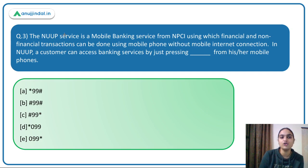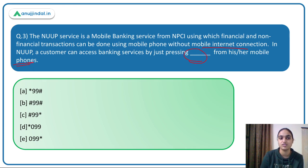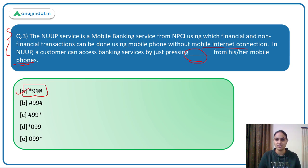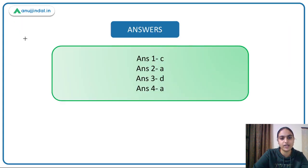The fourth question states that NUUP is a mobile banking service from NPCI using which financial and non-financial transactions can be done using a mobile phone without an internet connection. A customer can access bank services by dialing *99# (star 99 hash) from their mobile phone. This is the answer to the last question. That concludes today's session — thank you so much.